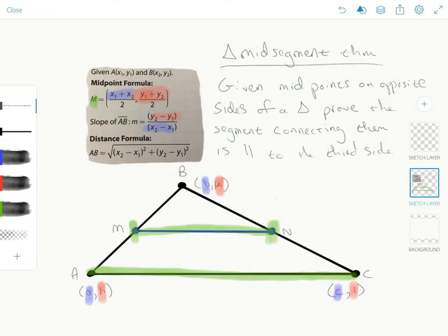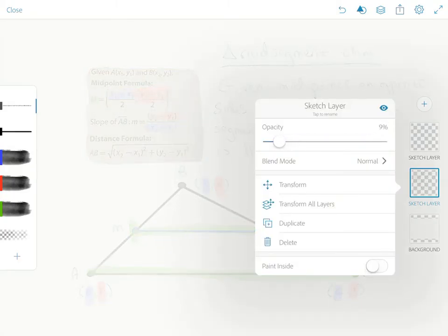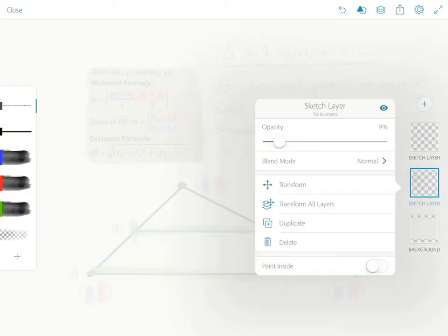So before we can use the slope formula, we need to have a location for point M and point N, and we're going to get that through the midpoint formula. So I'm going to turn this way low, so it's just barely visible, and maybe a little bit more than that, 20% maybe.